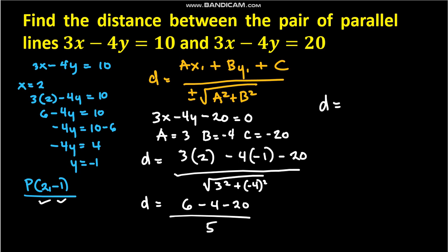Simplifying: d = 6 minus 4... let me check, -4 times -1, that should be plus 4. So 6 + 4 = 10, minus 20 is -10, divided by 5. Therefore, d = -2.